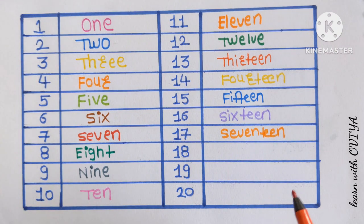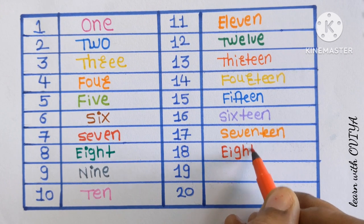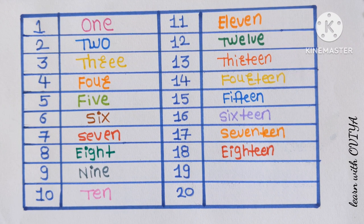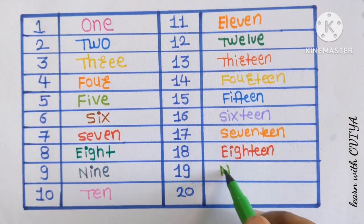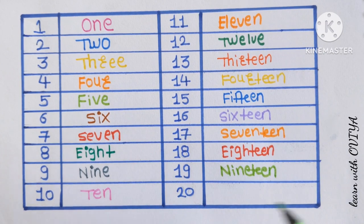Next is 18. E-I-G-H-T-E-E-N. 18 with a red color. Next 19 with a light green color.